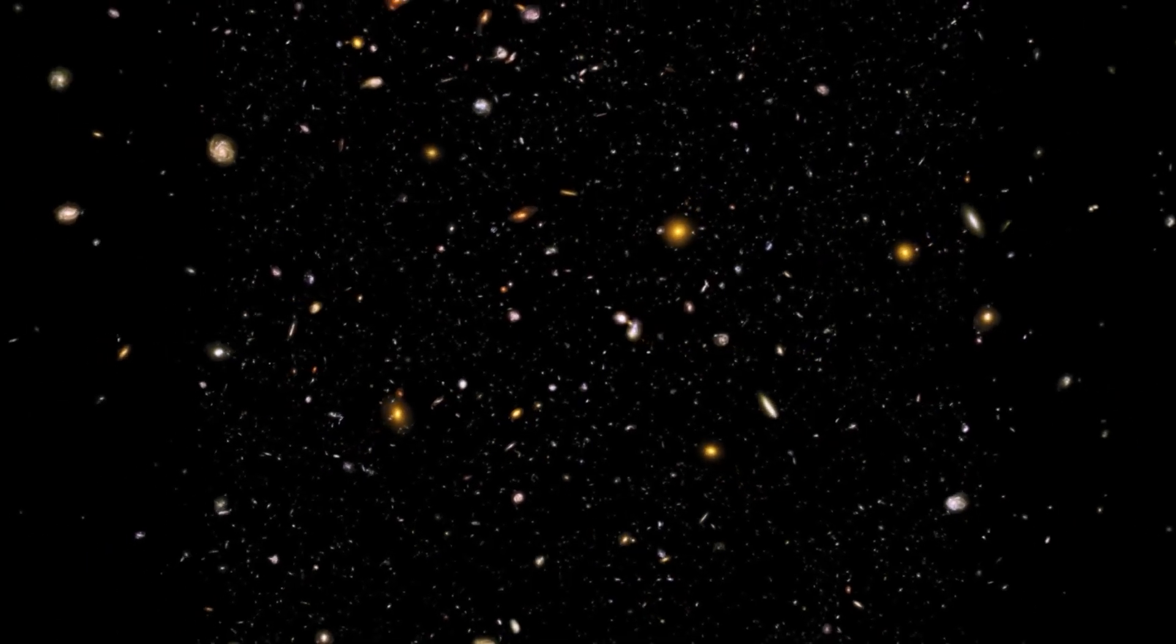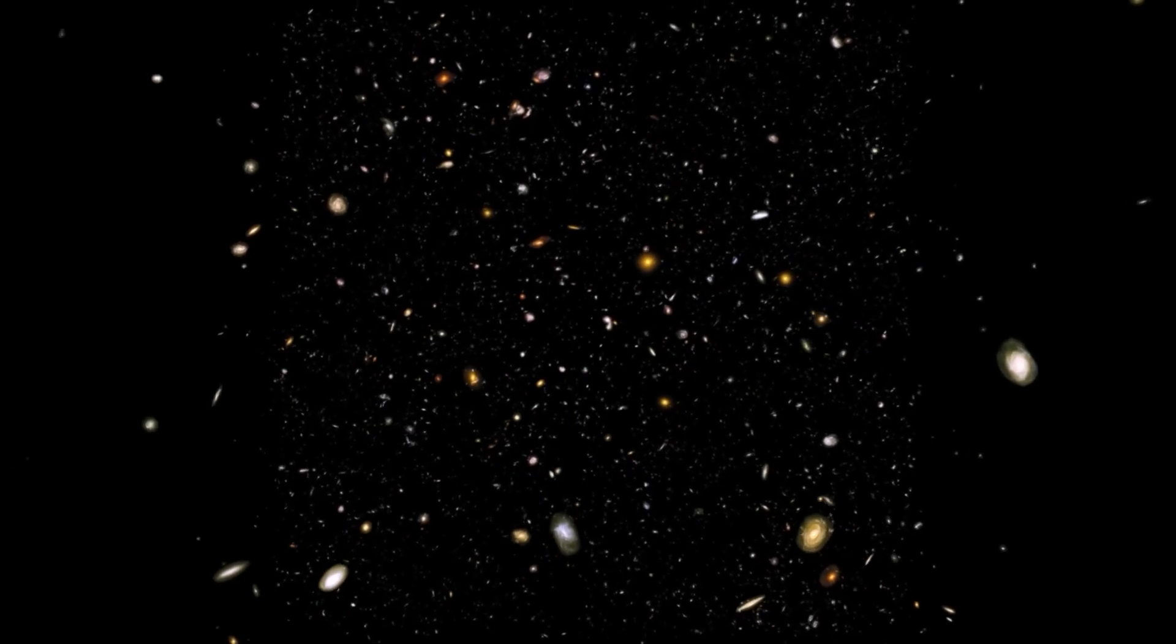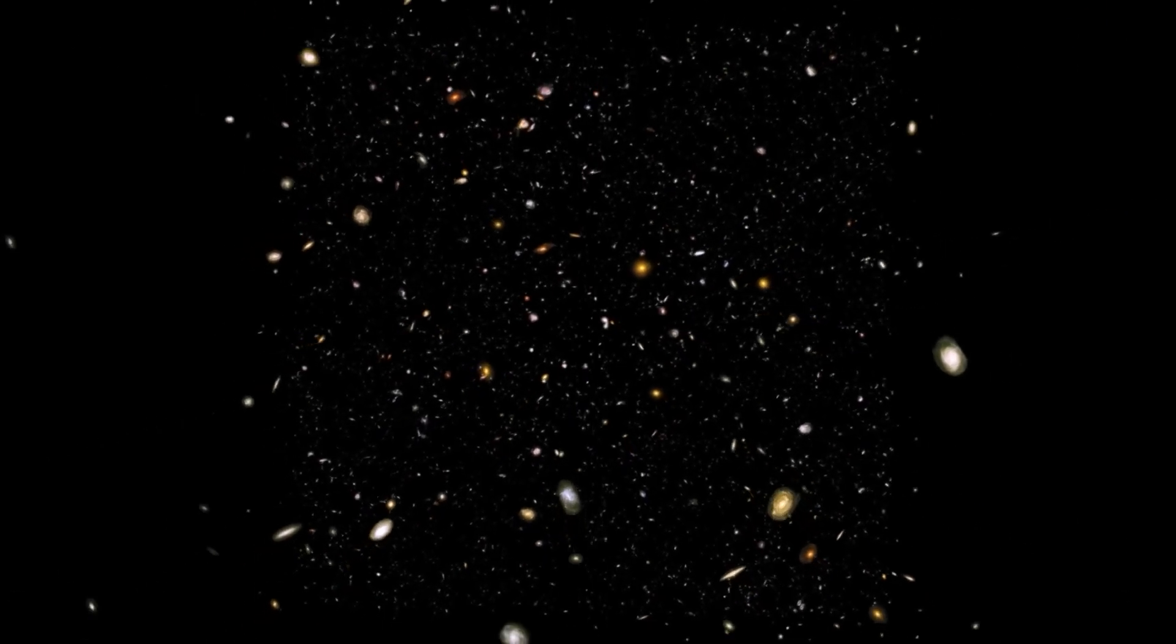This phenomenon, known as gravitational lensing, allows us to see where the dark matter is, which does not emit light and is therefore undetectable.